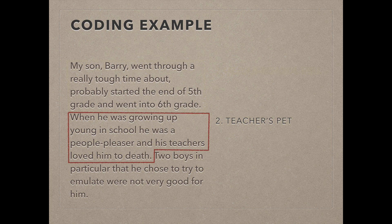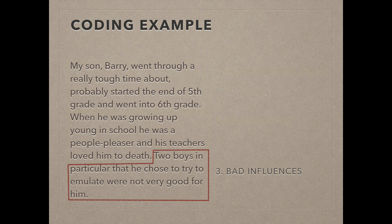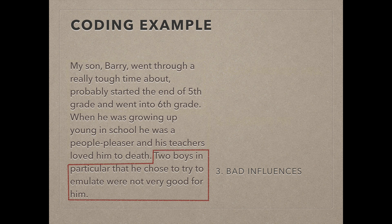The sentence that follows, the researcher uses the code teacher's pet to describe the information. In other transcripts or elsewhere in this interview, anywhere the researcher sees evidence of relating to being a teacher's pet would be coded this way. The third sentence is coded by the researcher as bad influences. Again, anywhere else in this interview or other transcripts that relate to issues of being a bad influence would be coded this way.